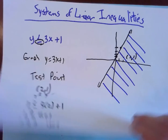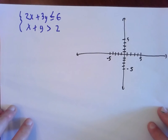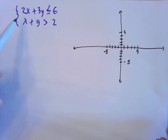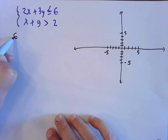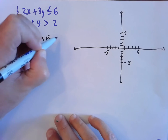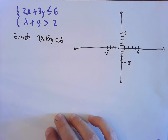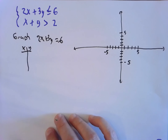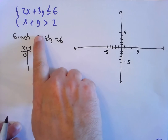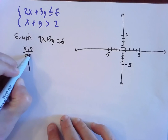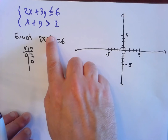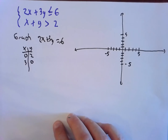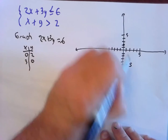Let's look at another example. We want to solve this system of linear inequalities by graphing — our answer is a picture, not a number or a point. The first thing is to graph the line 2x plus 3y equals 6. I'll use an xy chart. When x equals 0, 3y equals 6, so y equals 2. When y equals 0, 2x equals 6, so x equals 3. Two points on that line are (0, 2) and (3, 0).